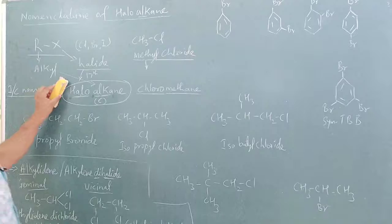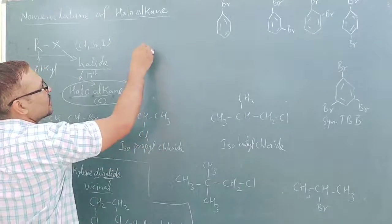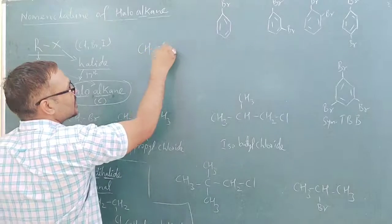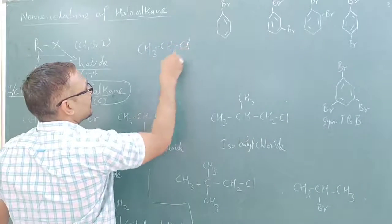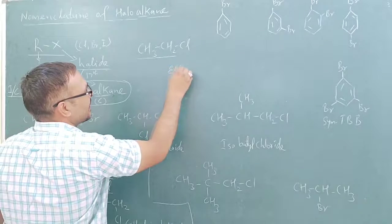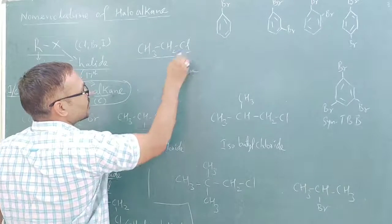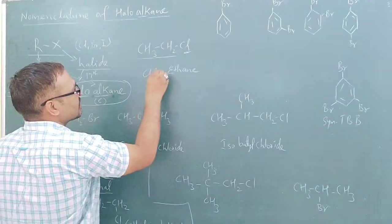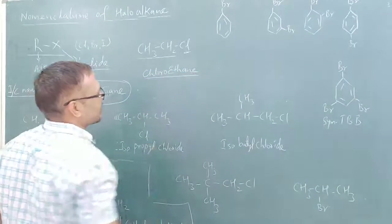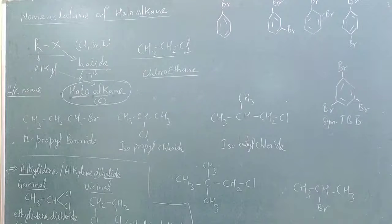Another example: take CH3-CH2-Cl. How many carbon atoms? Two. So here you write ethane, and the halogen is chlorine — so it is chloro-ethane. In this way you can name haloalkane compounds.